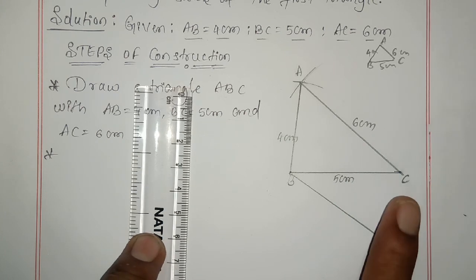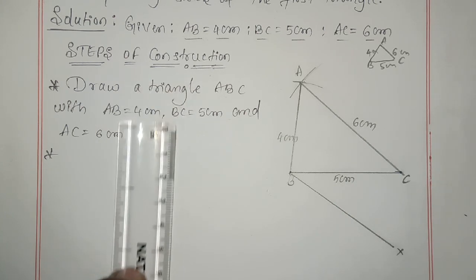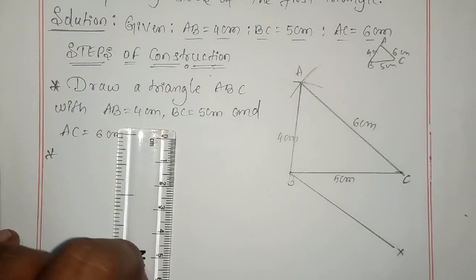After that, draw a ray BX below the triangle. BX should make an acute angle.